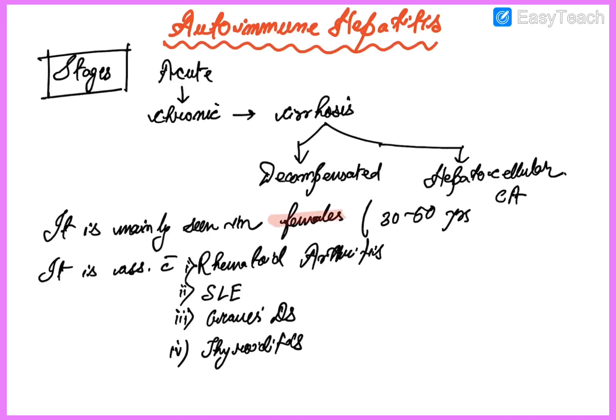Autoimmune hepatitis is mainly seen in females and is mainly associated with SLE, Graves' disease, rheumatoid arthritis, and hypothyroiditis.